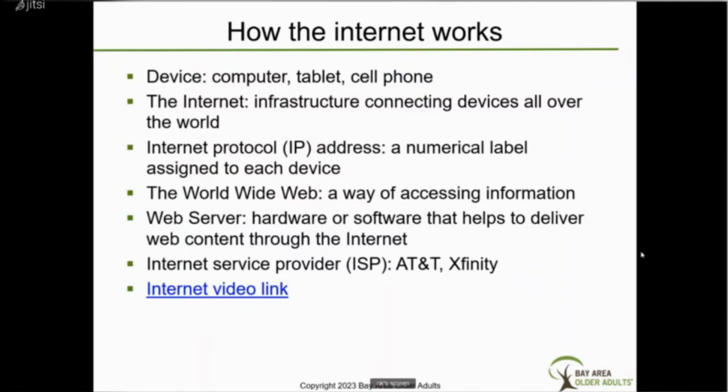The World Wide Web — usually people just call it the web — is the way we access information over the internet. A web server is hardware and software that helps deliver web content, such as email and web pages. ISP stands for Internet Service Providers — that's who you pay to give you internet service. The two most popular companies are AT&T and Xfinity.